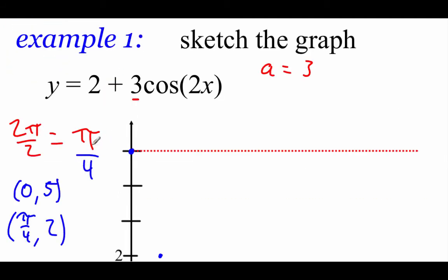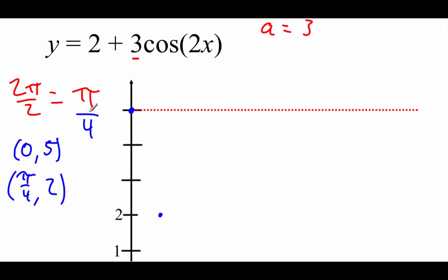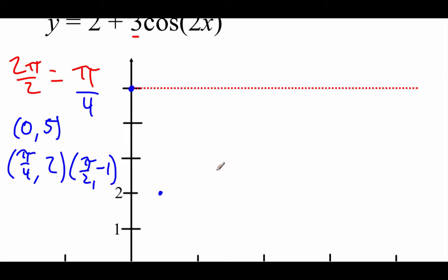Adding π/4 again: π/4 plus π/4 is 2π/4, which reduces to π/2. Plugging in: 2 times π/2 is π, cosine of π is negative 1, times 3 is negative 3, plus 2 gives negative 1. So at x = π/2, we're down at negative 1.